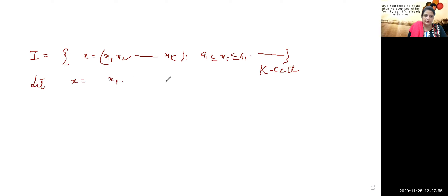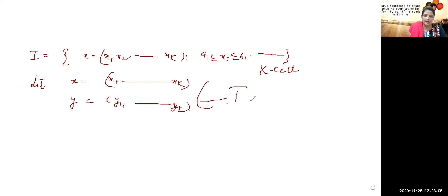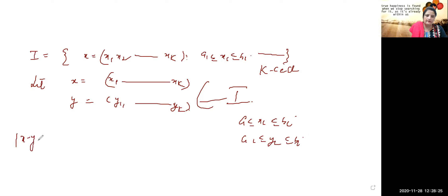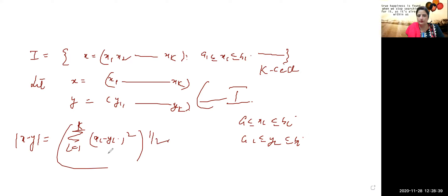We take two vectors: x = (x₁, x₂, ..., xₖ) and y = (y₁, y₂, ..., yₖ) as any two members of I. Definitely, the members of I satisfy aᵢ ≤ xᵢ ≤ bᵢ and aᵢ ≤ yᵢ ≤ bᵢ. The length between these two vectors is defined as: summation from i = 1 to k of (xᵢ − yᵢ)², raised to power 1/2. This is the length of two vectors in the metric space ℝᵏ.